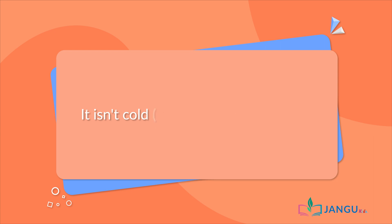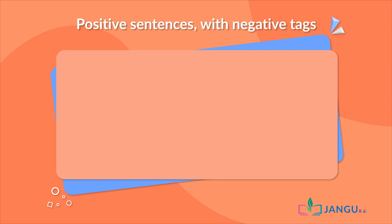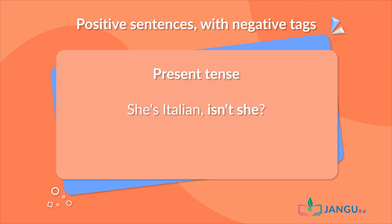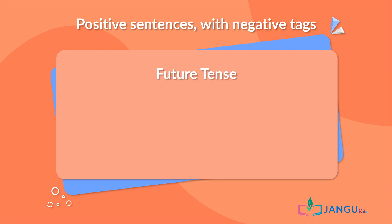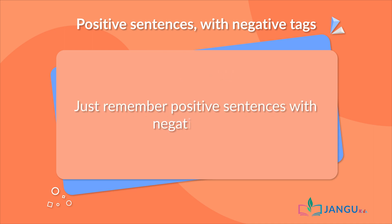Now let's look at some examples of positive sentences with negative tags. Present tense: "She's Italian, isn't she?" Past tense: "It was cold yesterday, wasn't it?" Future tense: "She'll come at six, won't she?" Just remember — positive sentences with negative tags.